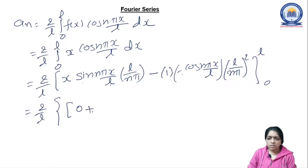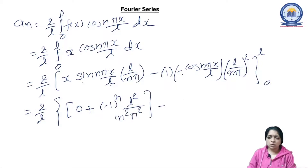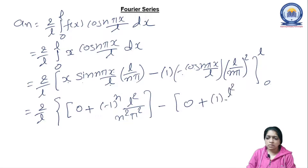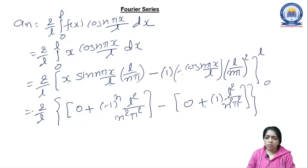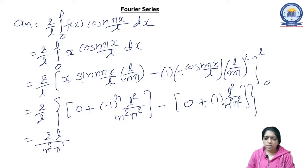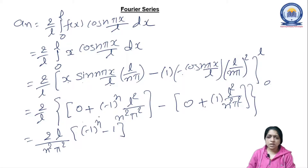Continuing: the minus minus gives plus, cos(nπ) = (−1)ⁿ, and we have L²/(n²π²). After applying the lower limit, 0 times anything is 0, and cos(0) = 1, giving L²/(n²π²). Taking L²/(n²π²) common and cancelling one L, we get aₙ = (2L)/(n²π²) · [(−1)ⁿ − 1].